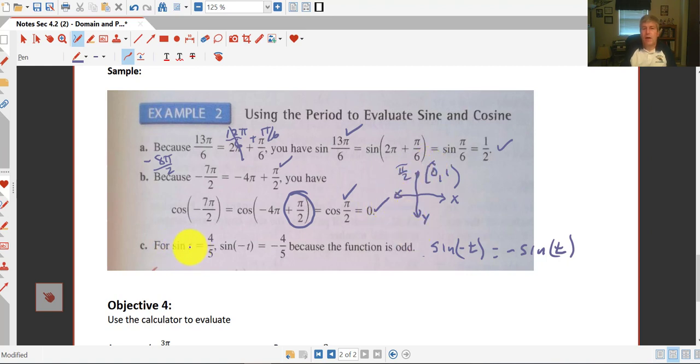And then for sine of some angle t, if it equals 4 fifths, this is going to be a 3, 4, 5 right triangle. The sine of the opposite of t is going to equal negative 4 fifths. We've got an odd function here. The sine of negative t equals the opposite of the sine of t. So sine of t is 4 fifths. The opposite of sine of t is negative 4 fifths.